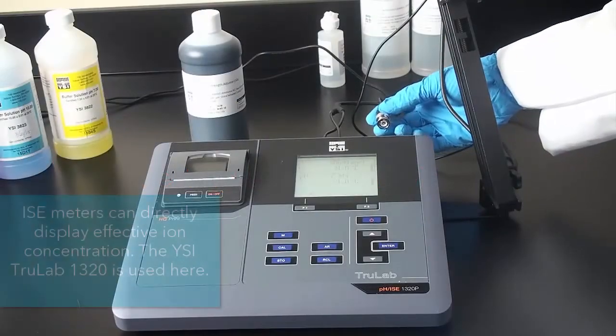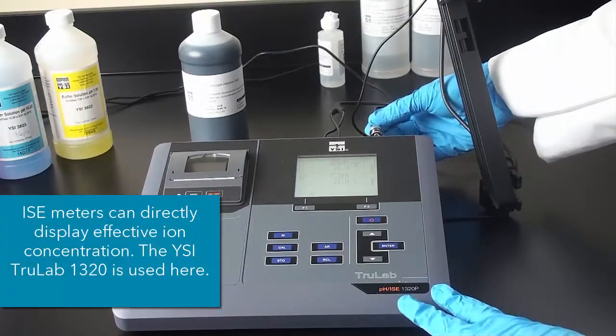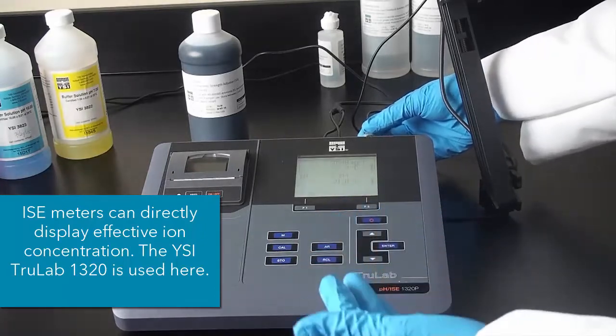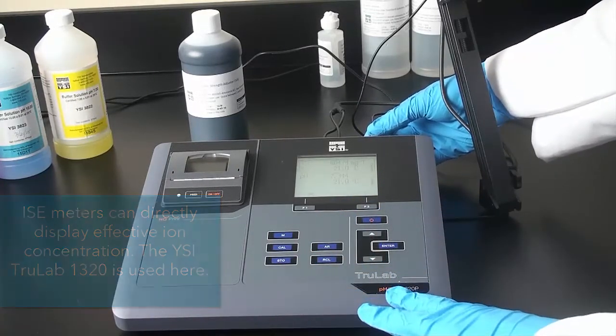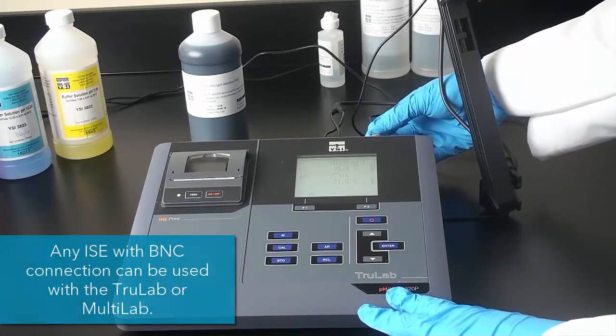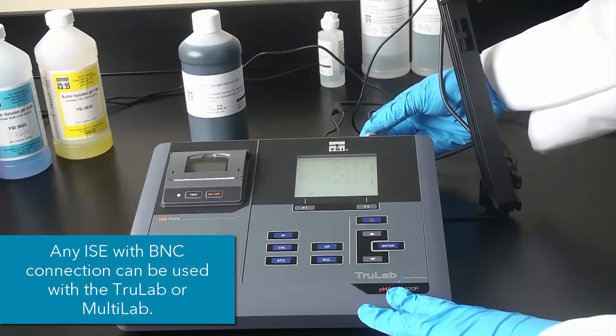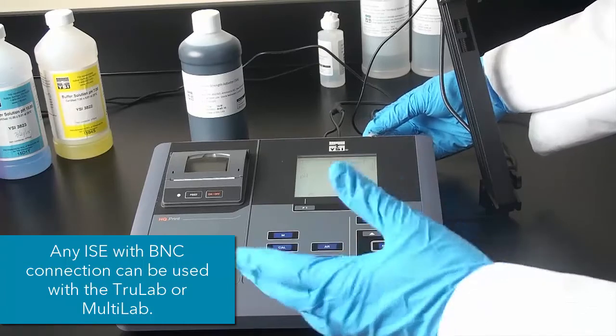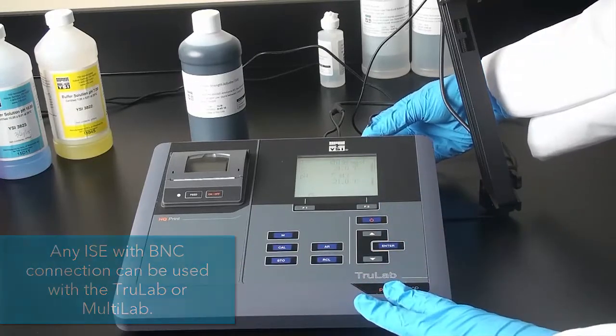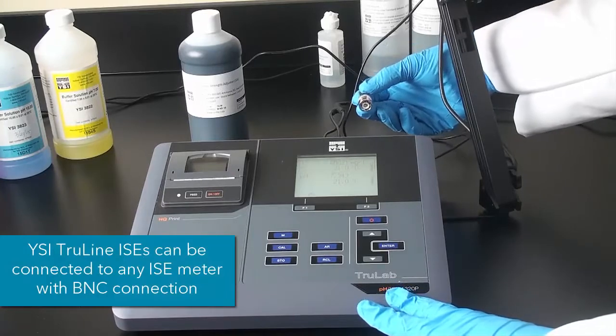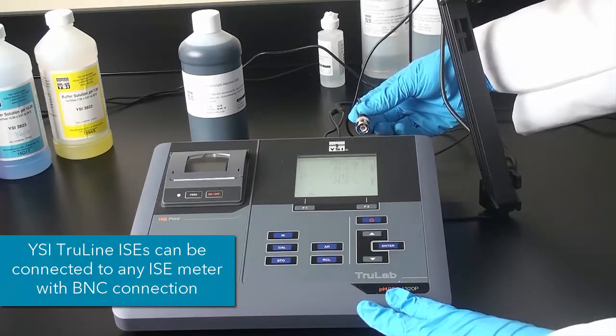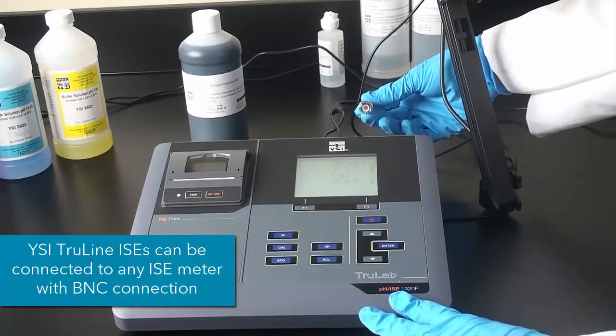So to calibrate the electrode, the first thing you will do is connect it to an instrument that can actually display ammonia concentration. So our TrueLab 1320 instrument and our MultiLab 2 and 3 channel instruments can measure ion concentration or effective ion concentration. You can connect this electrode to any other meter that does feature BNC connections, so other manufacturers' meters can also be used.